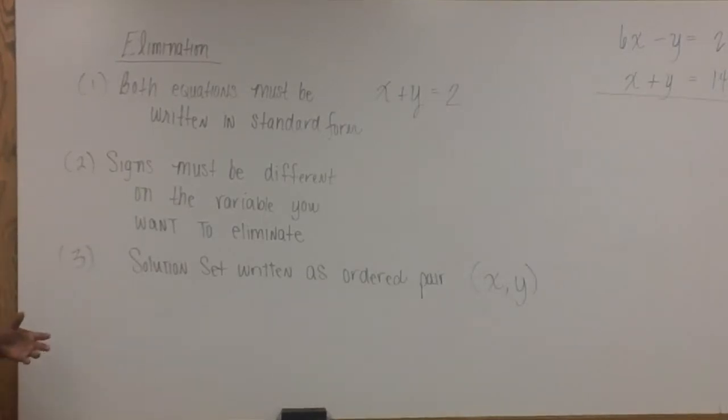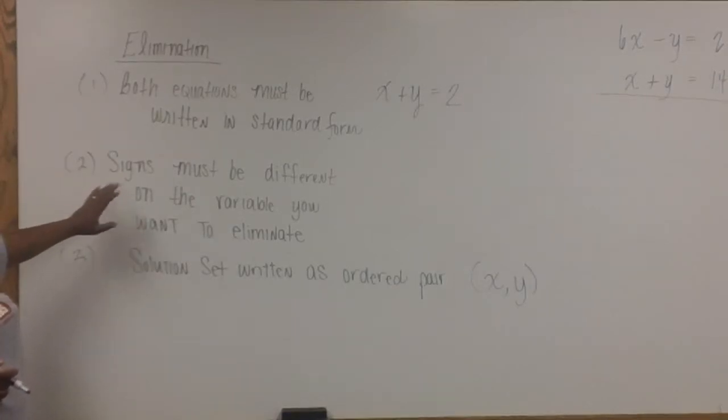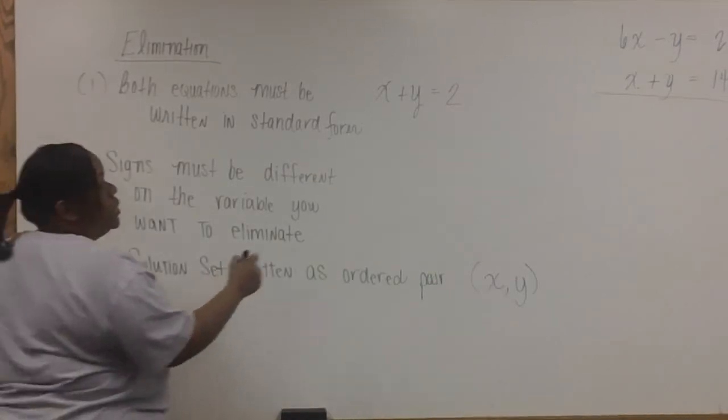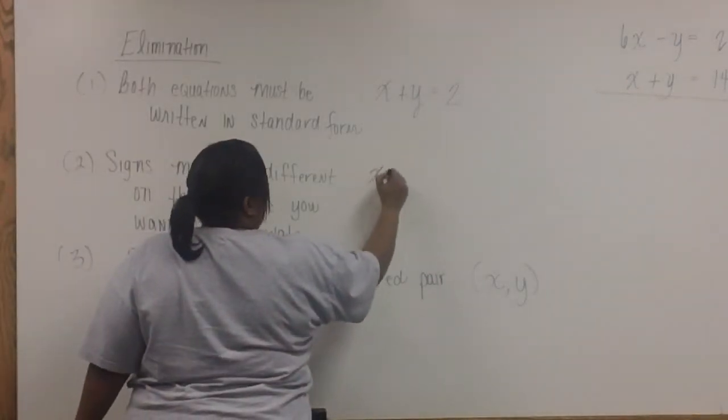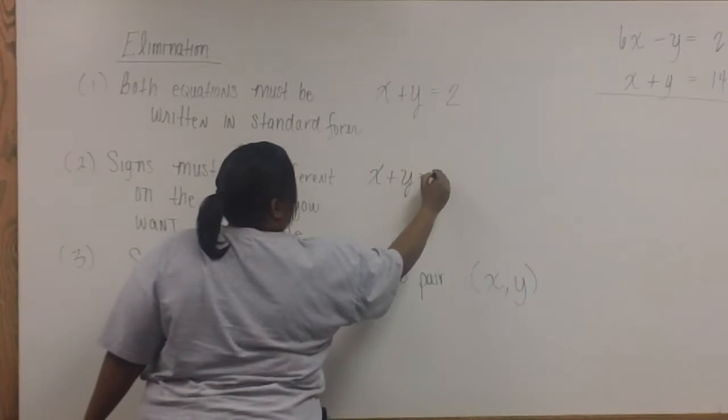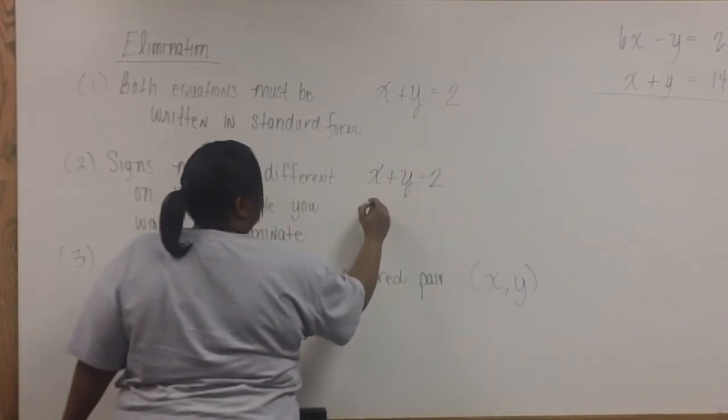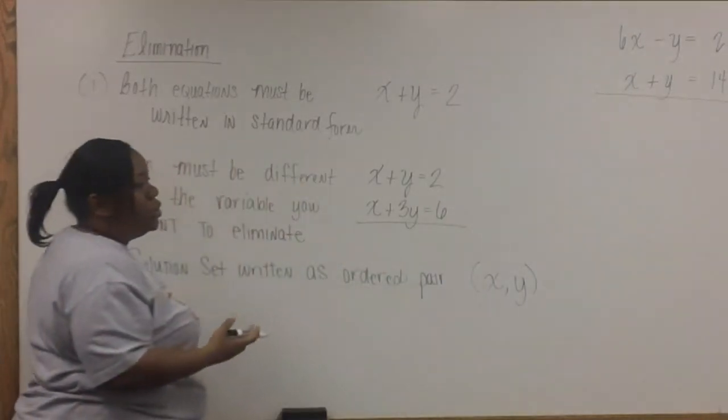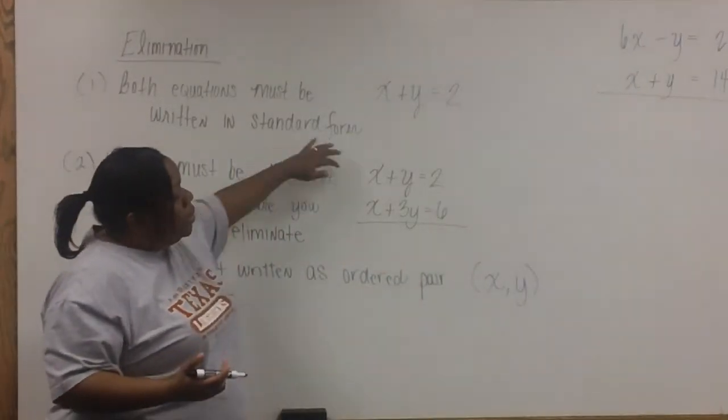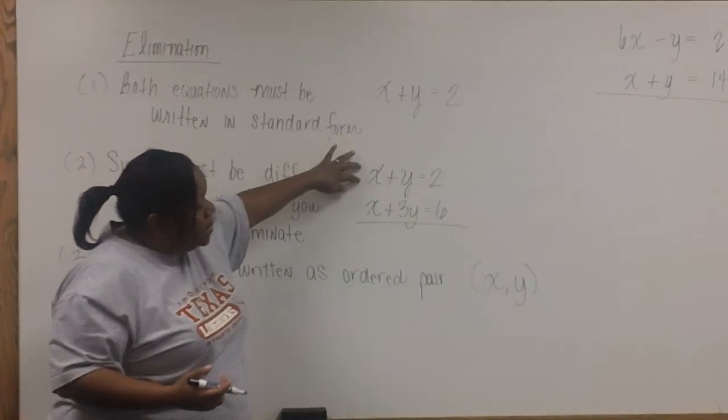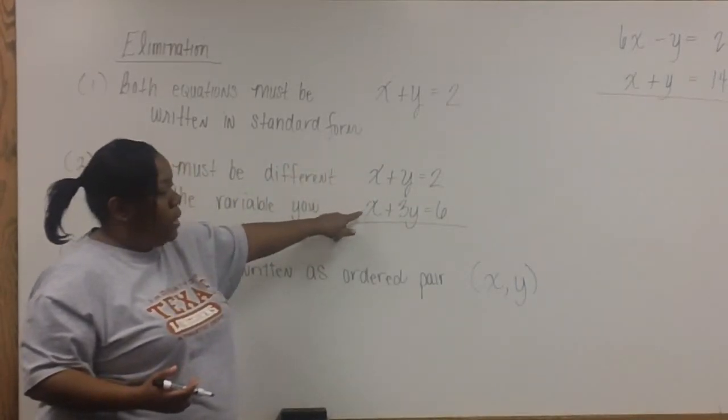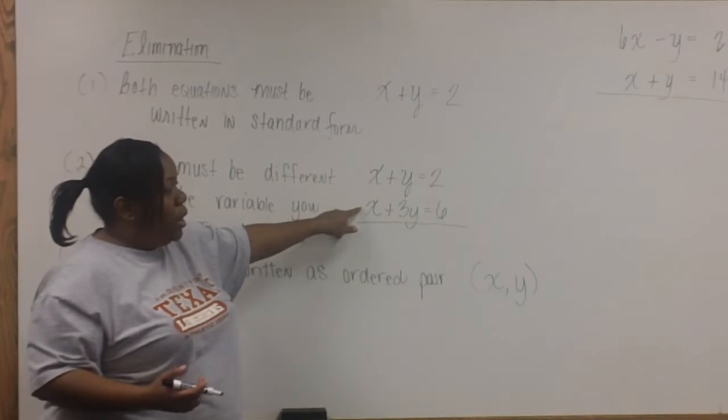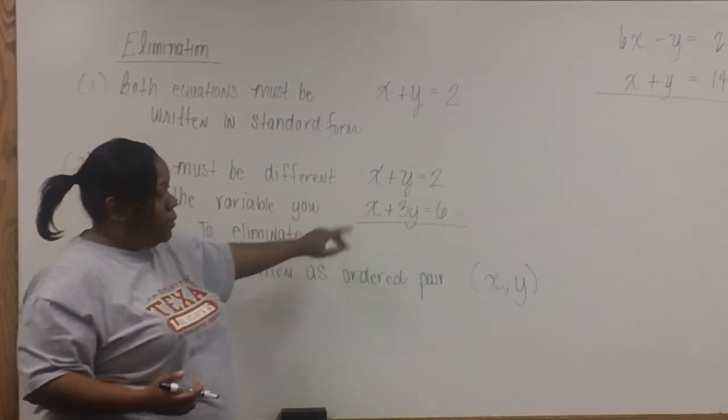The second thing you must be aware of is that if you're using elimination, the signs must be different on the variable you want to eliminate. For example, let's say that you have these two equations. If you choose to eliminate x, that means that one x needs to be positive and the other needs to be negative. And we'll talk more about that in a little bit.